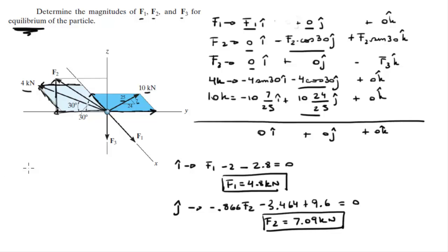The last equation uses the k components: 0 + F2 sin(30°) - F3 + 0 + 0 = 0. So F2(0.5) - F3 = 0. We already found F2, so when we plug it in and solve for F3, we get F3 = 3.55 kN.